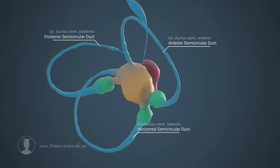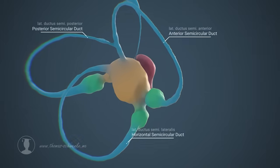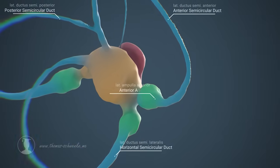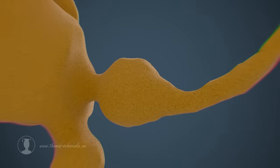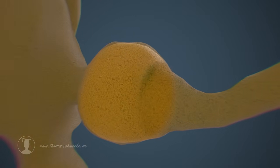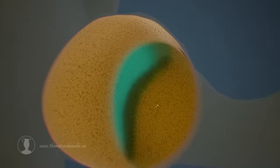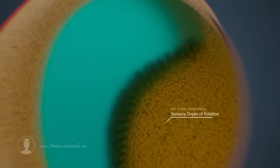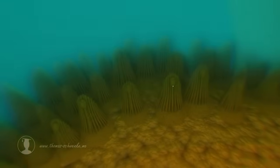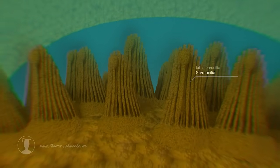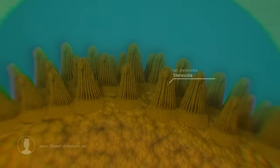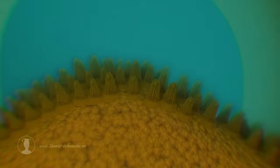As we already know, the duct system shown here contains a fluid known as endolymph. The ampullae also contain hair cells, which are located on a small bulge known as the crista ampullaris. Like the hair cells of the utricle and saccule, these hair cells are embedded in a gelatinous membrane. This membrane is called cupula, and unlike the membranes in the utricle and saccule, does not contain any statoliths.